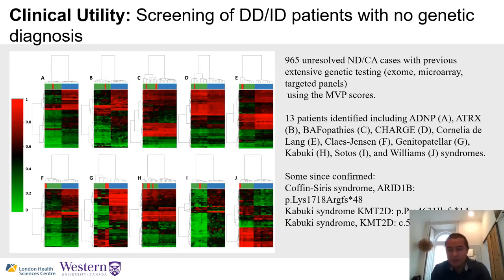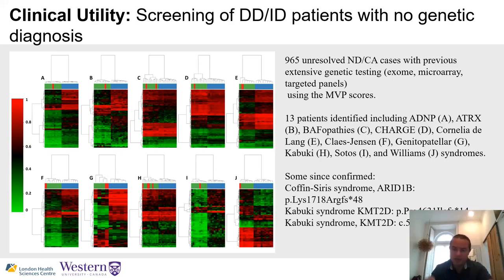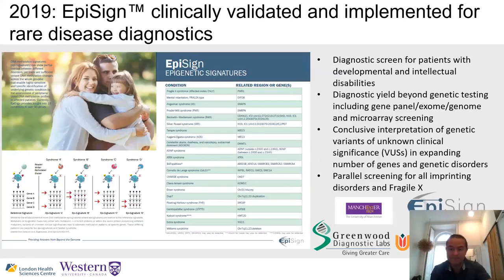Some patients have distinct clinical features and an epi-signature but no genetic variant is ever found — for those patients, the epi-signature is the only molecular evidence of their condition. About three to four years ago, in 2019, we launched what was the first DNA methylation assay for clinical use, primarily for reclassification of VUS and patient screening. The test has expanded significantly — the upcoming EpiSign 5, launching within the next few weeks, covers about 126 different genes and over 100 epi-signatures associated with over 100 genetic conditions.